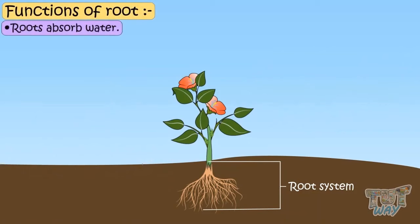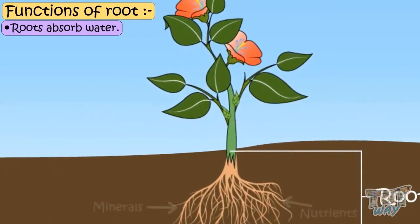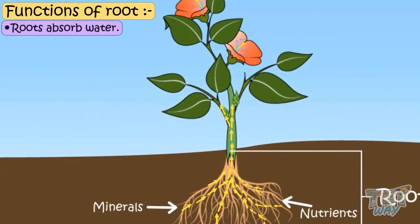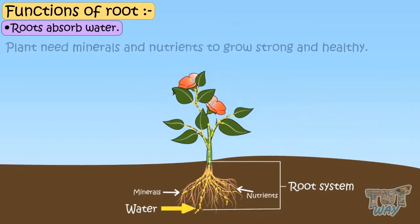Roots absorb water from the soil, which in turn provides the plants with nutrients and minerals. As we need food and water to live, same way, plants need these minerals and nutrients to grow strong and healthy.